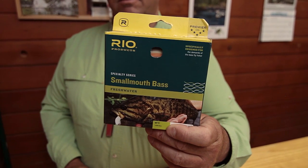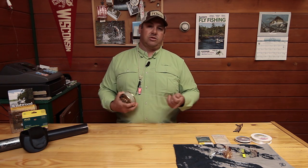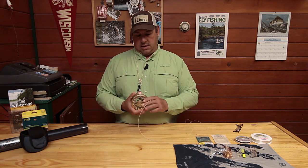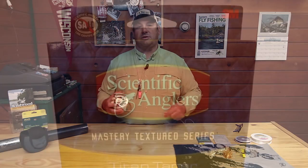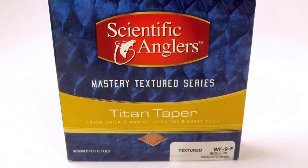And because of the big flies and the big rods I like to use really aggressive fly lines. The Reel Smallmouth is a very good line, as is the Scientific Anglers Titan Taper. It's a great line, it really loads the rod and I've been using it for two years now and it's a dynamite line. They're both great.